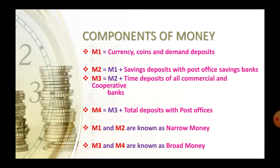M1 and M2 are called narrow money, while M3 and M4 are called broad money.